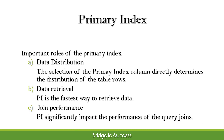The three most important roles the primary index plays are as follows. First, data distribution: the selection of the primary index column directly determines the distribution of the table rows. Ideally, the rows should be distributed as evenly as possible across the AMPs. If the distribution is poor, only a portion of Teradata's AMPs are processing data, which impacts performance.